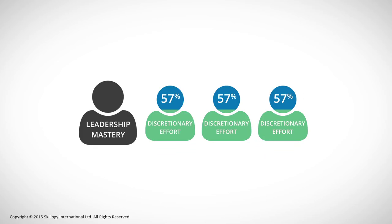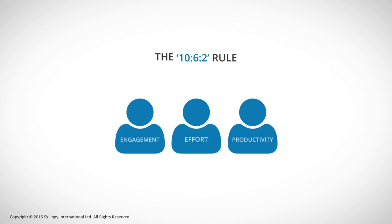These proactive employees actually seek ways to improve their performance, and this can be charted using the 10-6-2 rule: for every 10% improvement in engagement, there is a 6% increase in discretionary effort and a 2% improvement in productivity.